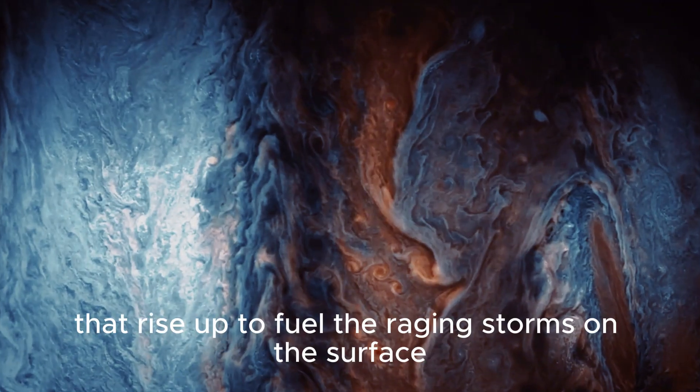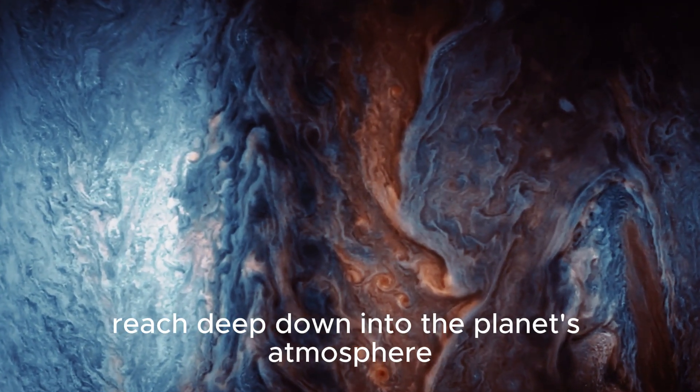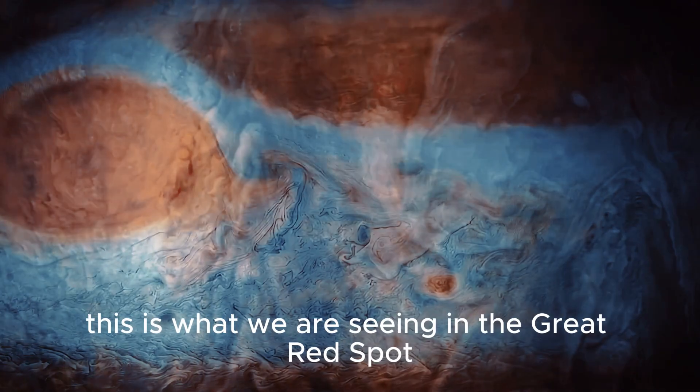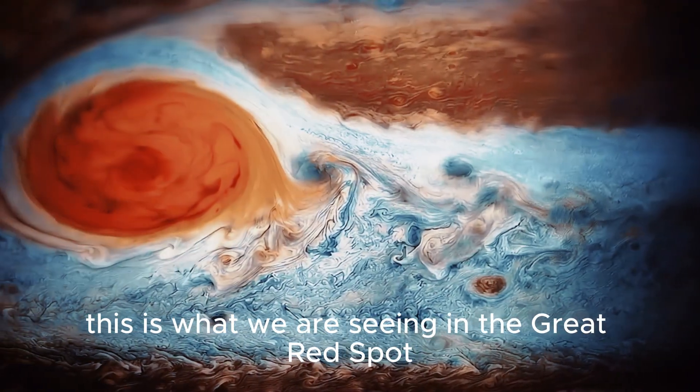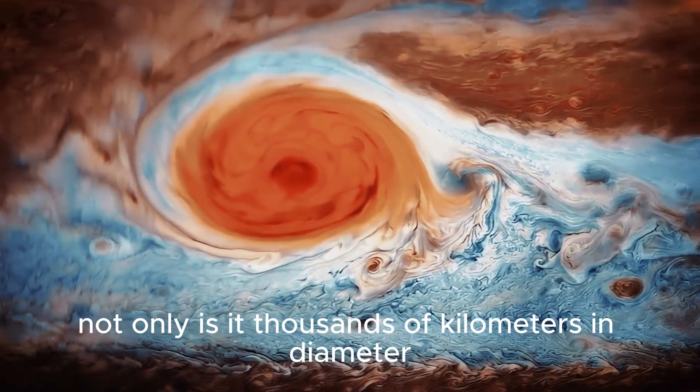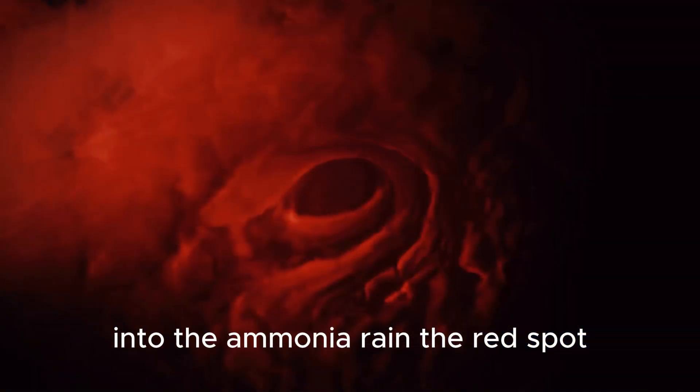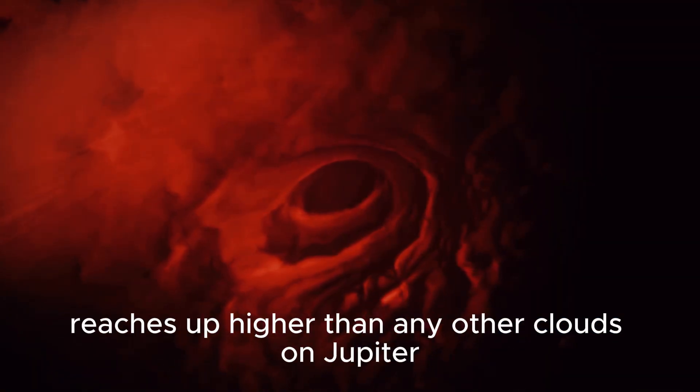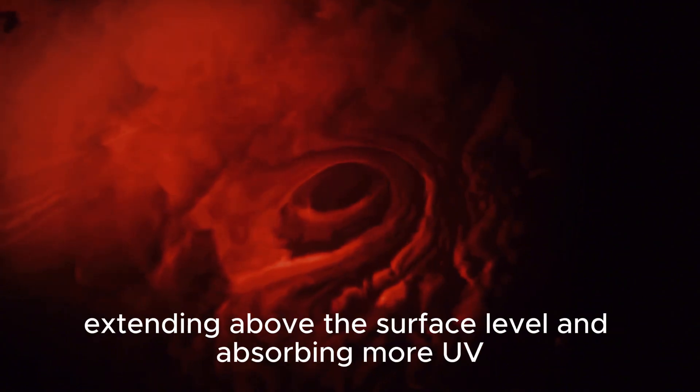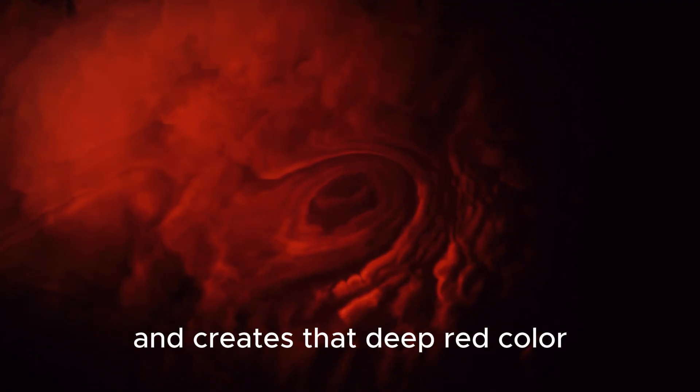These jets of hot gas that rise up to fuel the raging storms on the surface reach deep down into the planet's atmosphere. This is what we are seeing in the Great Red Spot. Not only is it thousands of kilometers in diameter, it also extends down hundreds of kilometers into the ammonia rain. The red spot reaches up higher than any other clouds on Jupiter, extending above the surface level and absorbing more UV light from the sun, which then reacts with chemical compounds in the storm and creates that deep red color.